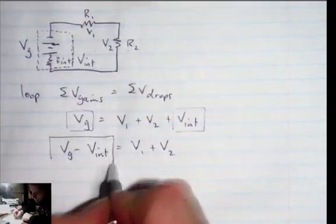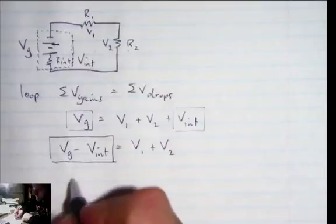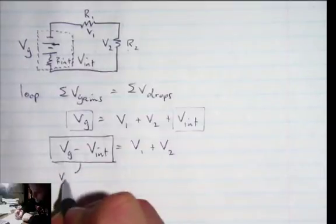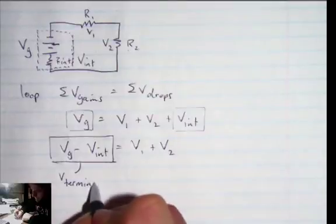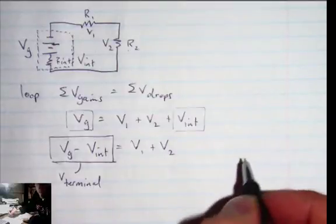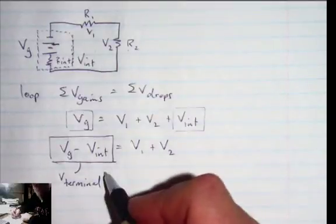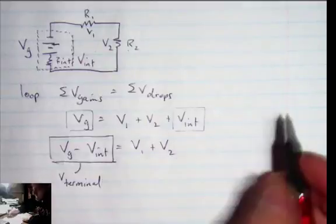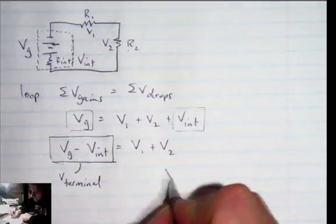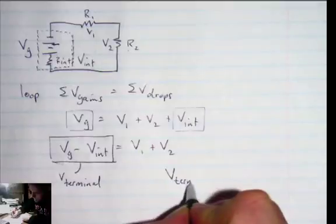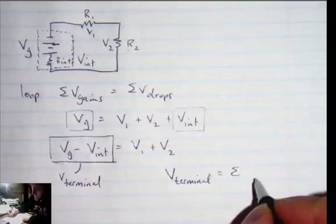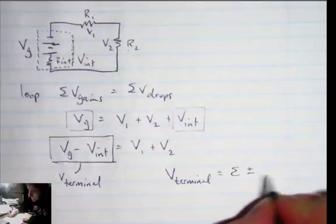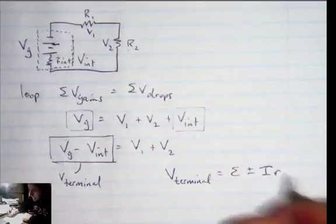This is what we call the terminal voltage. It's referred to as V terminal on your formula sheet, and the formula they give you looks different than this. They give you the following: V terminal equals epsilon plus or minus I R.